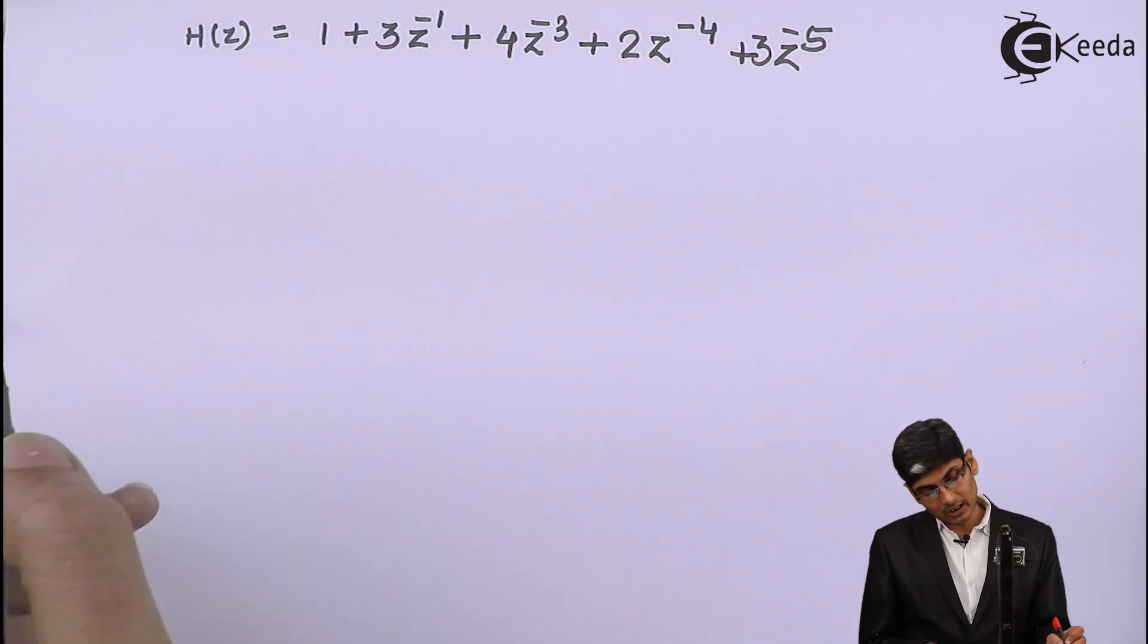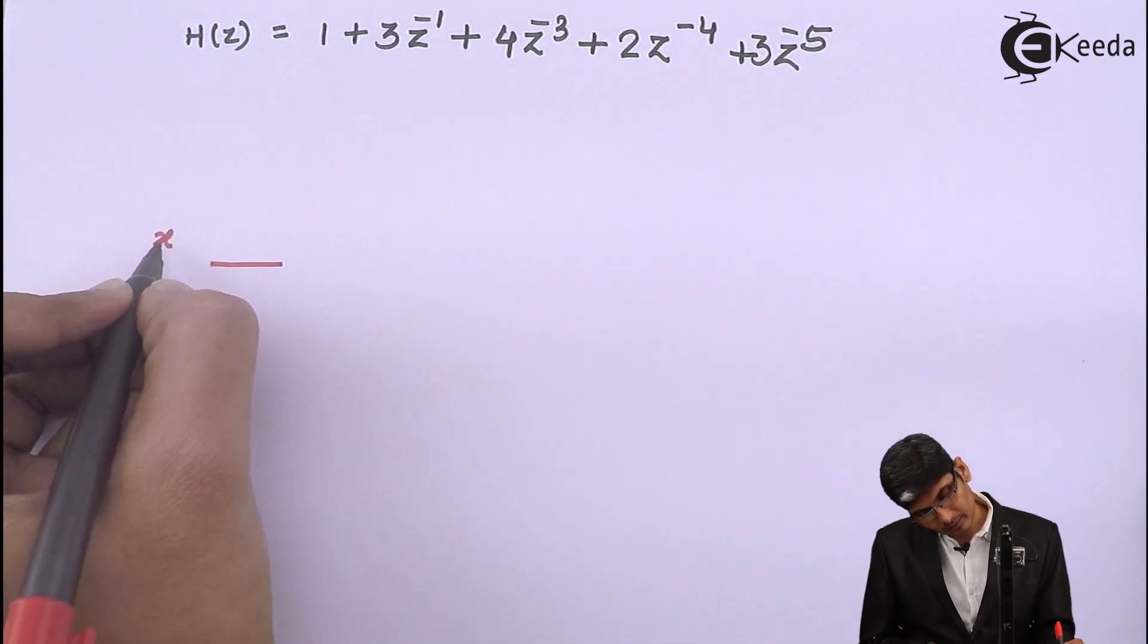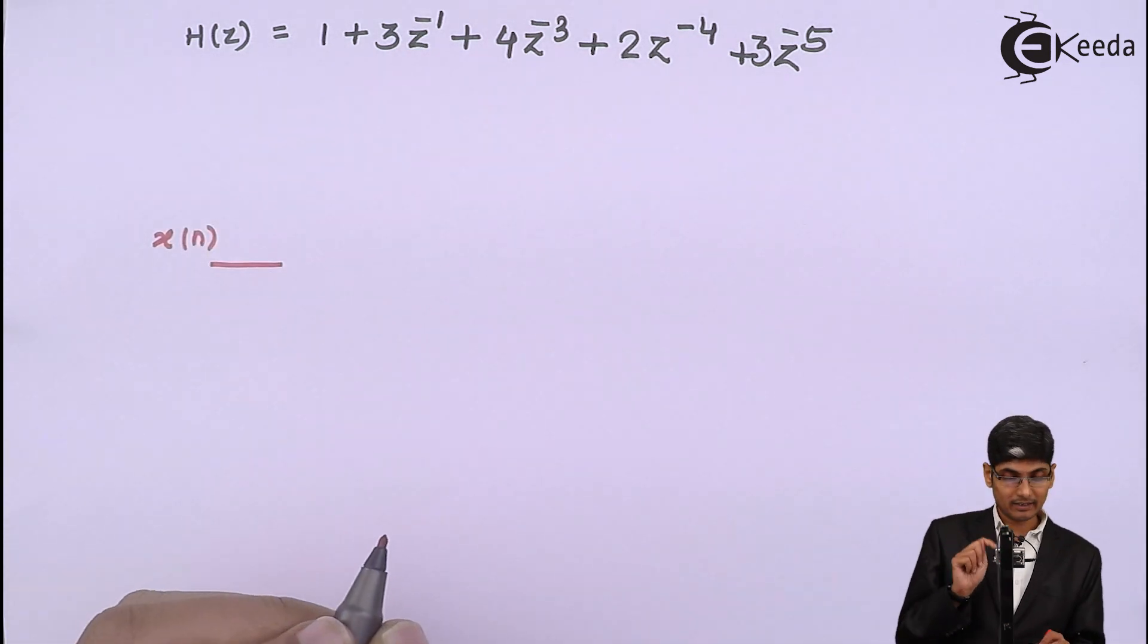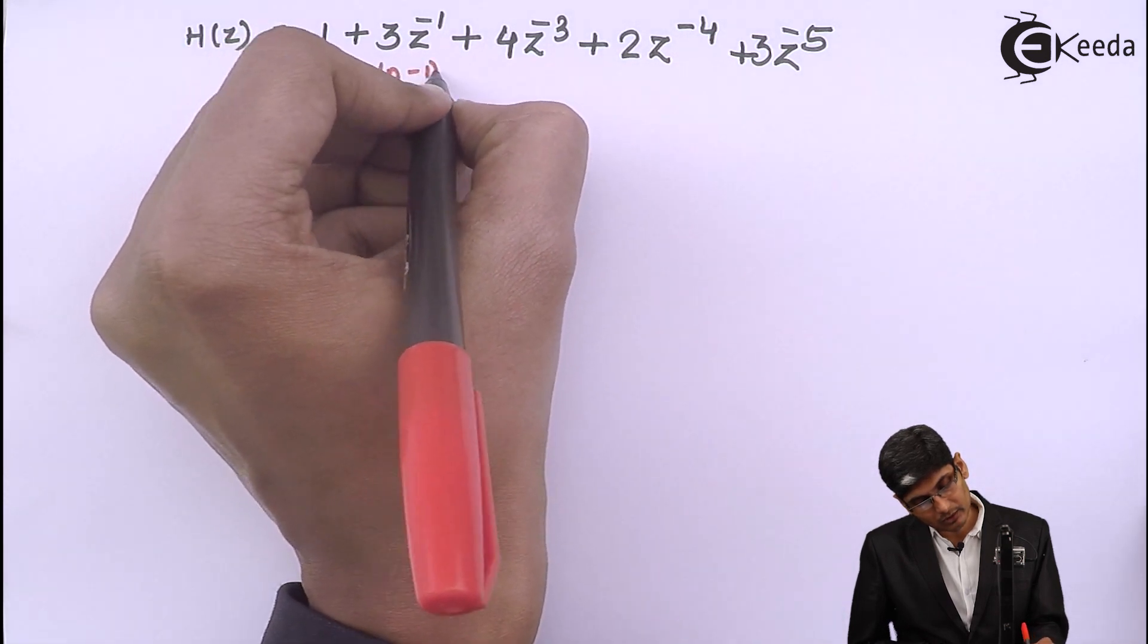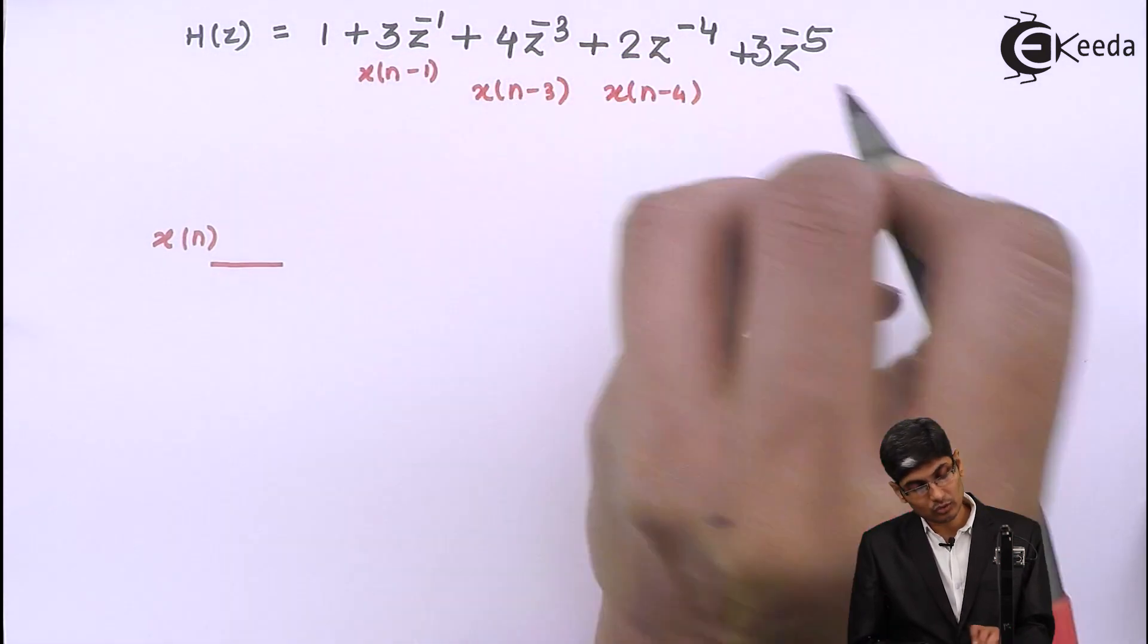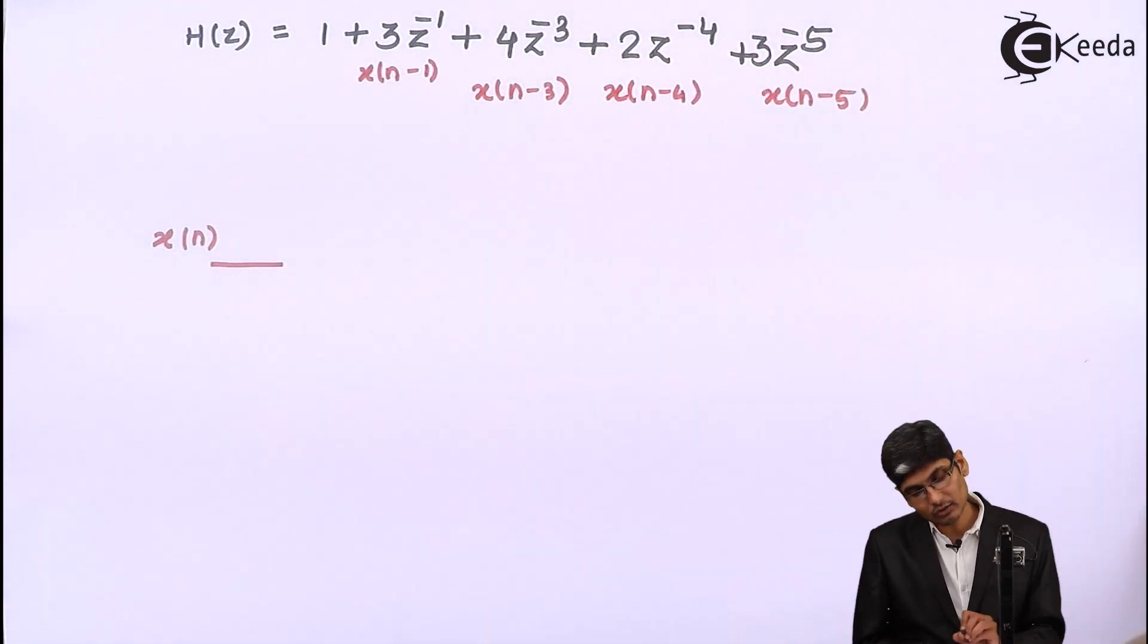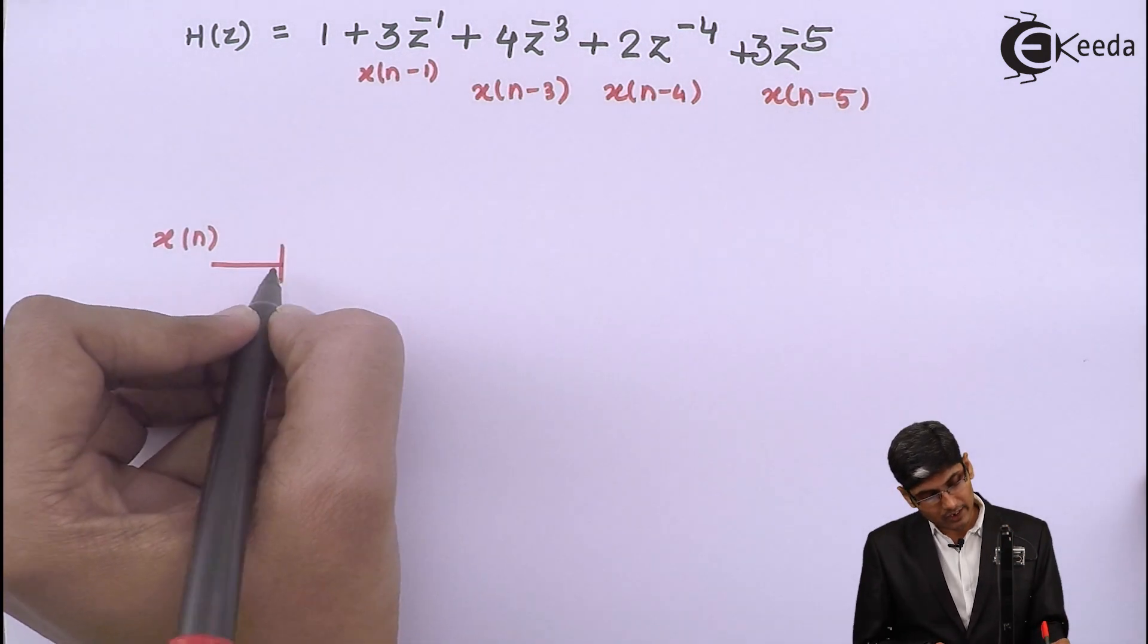In the tapped method, I will first draw my x(n) line and then we will see how many delays are required. Here I require one delay because it will result into n minus 1. Here it will be x(n-3), so I require 3 delays. Here it will result n minus 4, so I will require 4 delays. And here it will require n minus 5. So it will require in all 5 delays. So let us draw 5 delay structures.